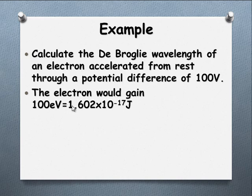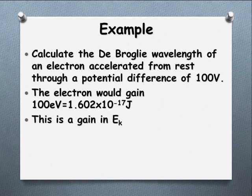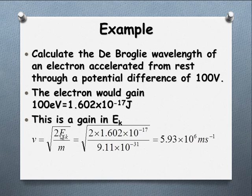Electron volts doesn't work here — we're talking in terms of joules. Converting that to joules, we've got 1.602 times 10 to the negative 17 joules, or 100 times 1.6 times 10 to the negative 19, which is the charge on the electron. Substituting that into the kinetic energy equation and rearranging to find the velocity — E equals one-half mv squared — multiplying by 2 on both sides, dividing by m and taking the square root, we get a velocity of almost 6 times 10 to the 6 meters per second.